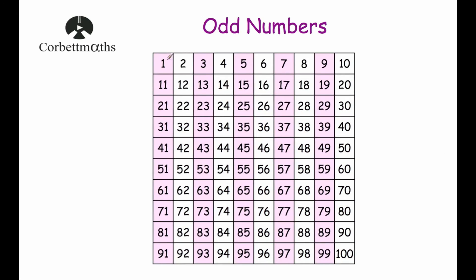Whereas the odd numbers — if we colour our odd numbers in pink — so 1, 3, 5, 7, 9, 11, 13, 15, 17, 19 and so on. The first column of odd numbers ends in 1. The second column ends in 3. The next column ends in 5. The next column ends in 7. And the last column of odd numbers ends in 9.